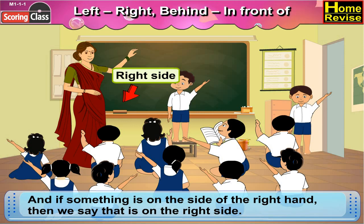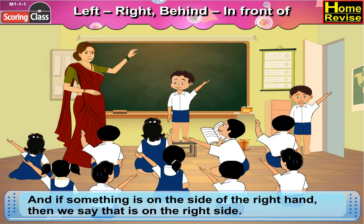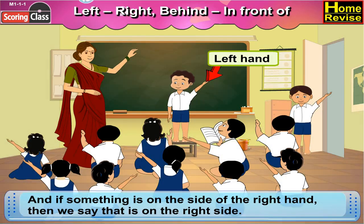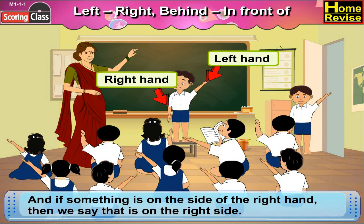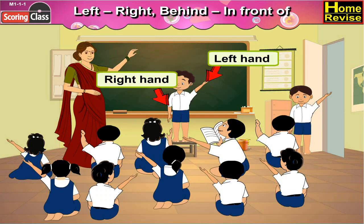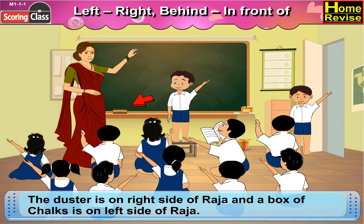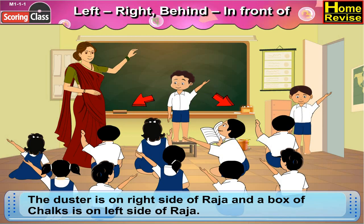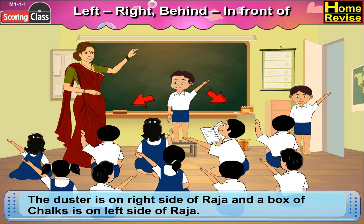Or right hand side. Have you understood? This is left hand and this is right hand. The duster is on the right side of Raja, and a box of chalks is on the left side of Raja.